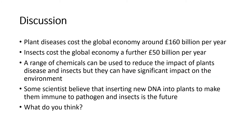Financially, plant diseases and insects like aphids cost over £200 billion per year to the global economy, which is quite considerable. We can use a range of chemicals — pesticides, insecticides and so forth — to reduce their impact, but these have their own problems associated with environmental impact. Some scientists argue that we should be allowed to insert new sections of DNA into plants and crops to make them immune to pathogens and insects, giving them a sort of natural immunity. It's worth having one or two valid points on this, as it could come up as an opinion question in the exam.